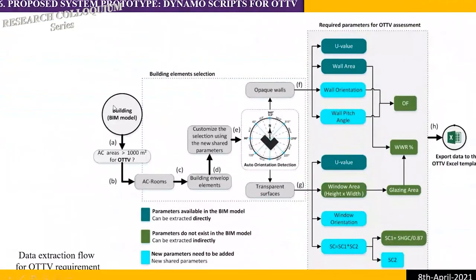For OTTV, the workflow starts from the BIM model. The first condition checks if the air-conditioned area is more than 1000 square meters for OTTV calculation, according to MS1525. The script then goes to air-conditioned rooms and focuses on building envelope elements of those rooms. It detects the orientation of all walls and windows, extracts all the data needed for OTTV, and outputs the results in Excel.